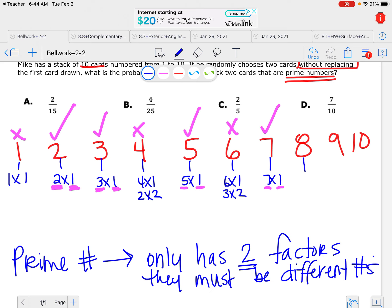Then 8, we can do 8 times 1, and then you can do 4 times 2. So that has more than two factors. Then 9, 9 times 1, and then 3 times 3. So that has just barely over, so that doesn't work. And then 10 has 10 times 1, and then 5 times 2. So that also says too many numbers.